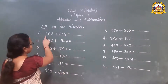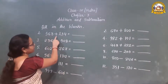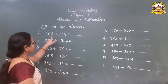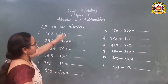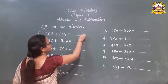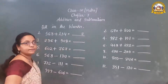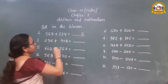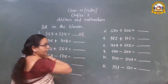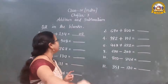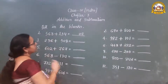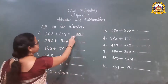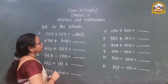First question: 568 plus 134. How to add the numbers? 8 plus 4 is 12, carry 1. 6 plus 3 is 9, plus 1 carry is 10, carry 1. 5 plus 1 is 6, plus 1 carry is 7. So what is our answer? Our answer is 702.